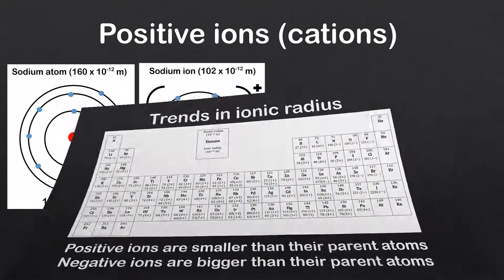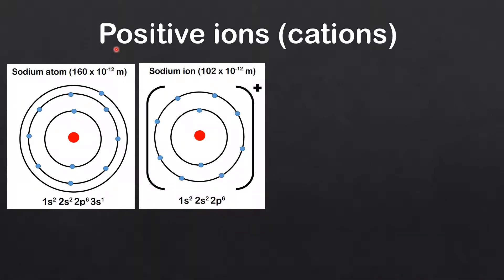Next we'll have a look at the reasons for this, starting with positive ions or cations. Here we have the sodium atom. The electronic configuration of the sodium atom is 1s², 2s², 2p⁶, 3s¹. It has three occupied energy levels with one electron in the valence shell. When sodium forms ions, it loses this outer electron in the n=3 energy level to form a 1+ ion. The electronic configuration of the sodium ion is 1s², 2s², 2p⁶.